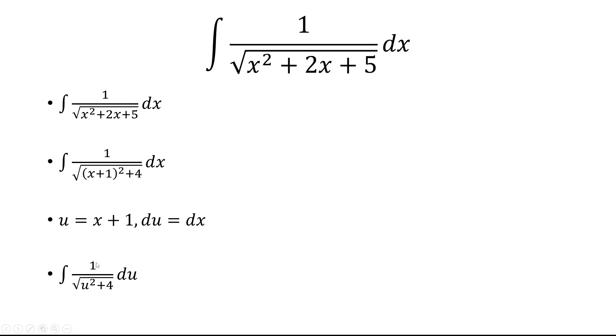So that's just 1 over the square root of u squared plus 4. And at this point, we want to make a trig substitution. So we'll let u equal 2 tangent theta. So du is 2 secant squared d theta.